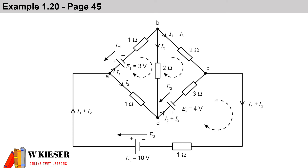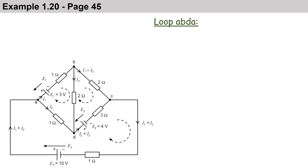In this calculation we have a Wheatstone bridge — it's considered to be a balanced Wheatstone bridge — and we need to solve for the currents through each branch using Kirchhoff's laws. I recommend you write down all the steps I'm showing you. I'm going to break it up into different parts. I'm going to have three equations; my first equation will start with loop ABDA.